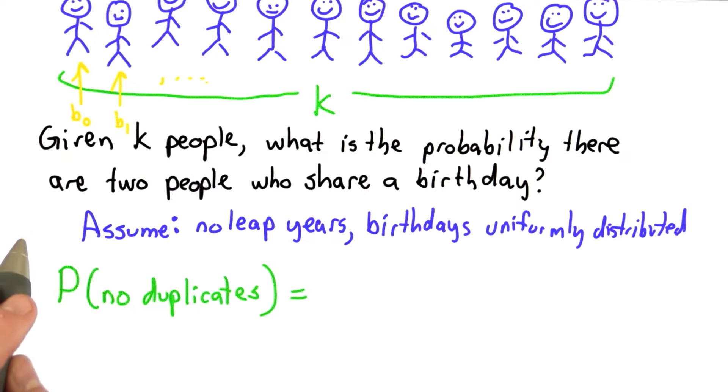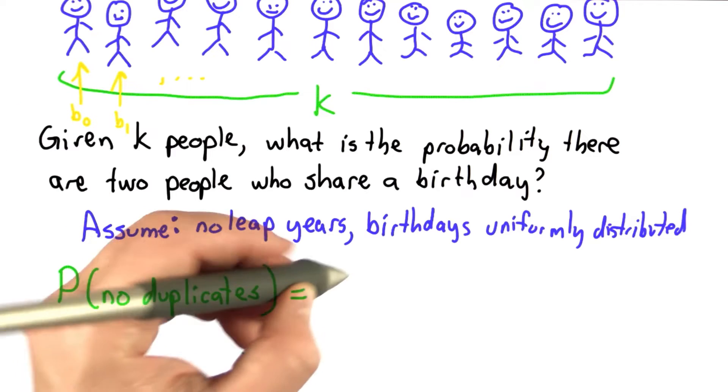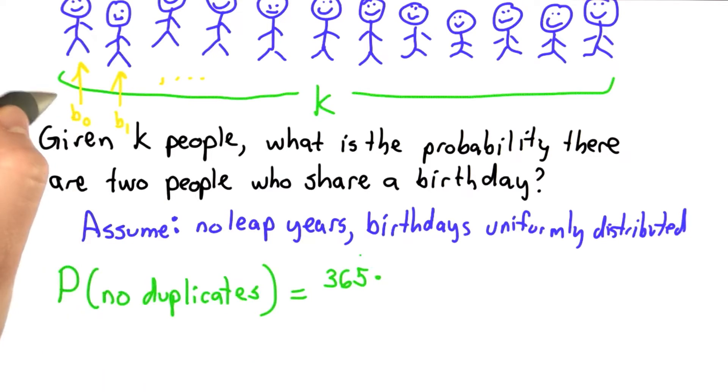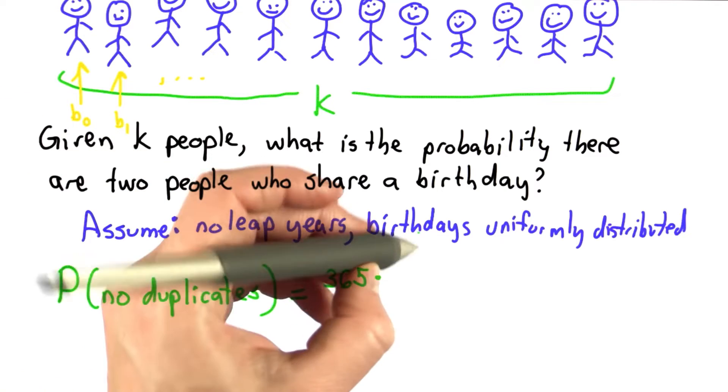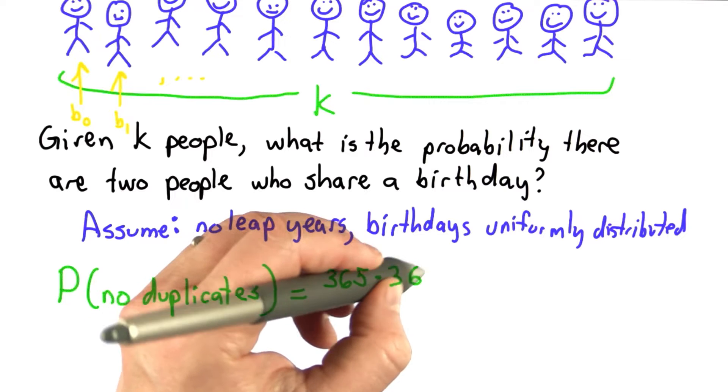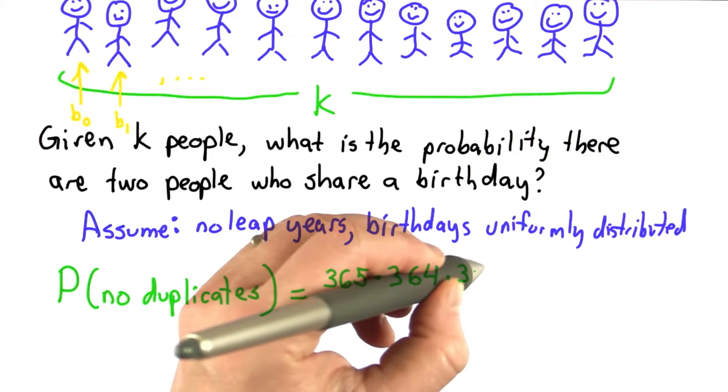In order to assign birthdays with no duplicates, there's a limited number of ways that we can pick any of 365 days for the first birthday. For the second one, if we want no duplicates, we can't use whatever day we pick for the first one. It would be that times 364 times 363 and so forth.